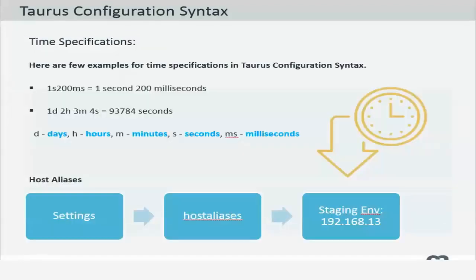The Taurus configuration syntax also includes time specifications. It's quite easy to specify time: S stands for seconds, ms stands for milliseconds, d for day, h for hours, and m for minute. There is a general suggestion to use the unit of seconds to specify the time. If you do not follow the syntax of the time interval there is a likely chance of encountering a bug at the time of execution.